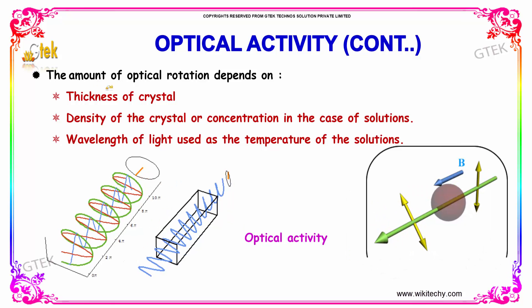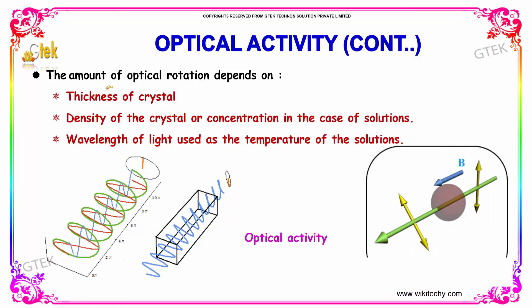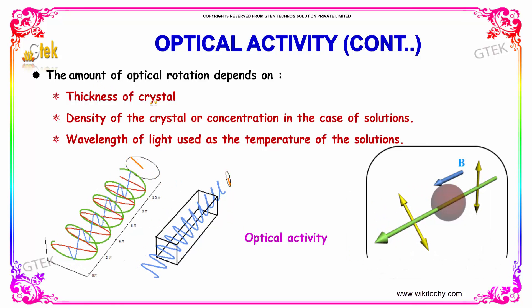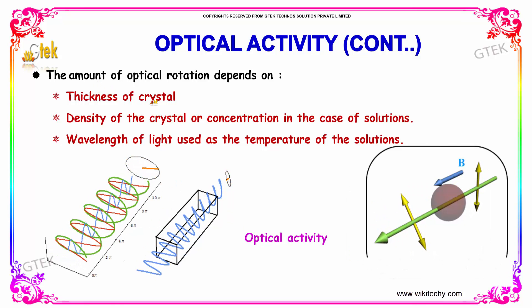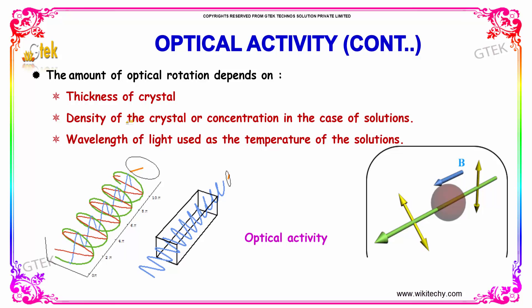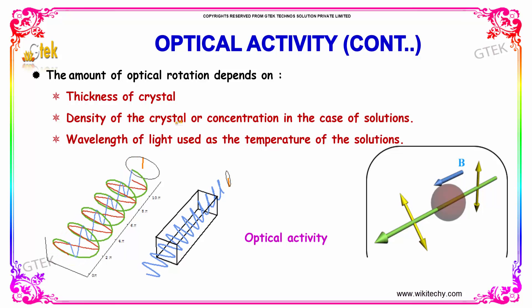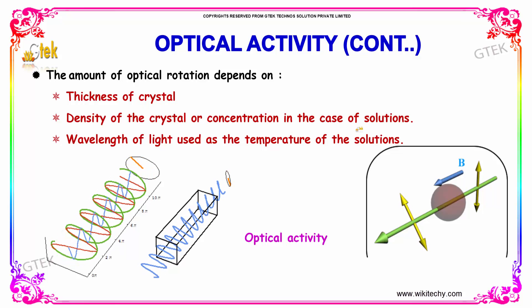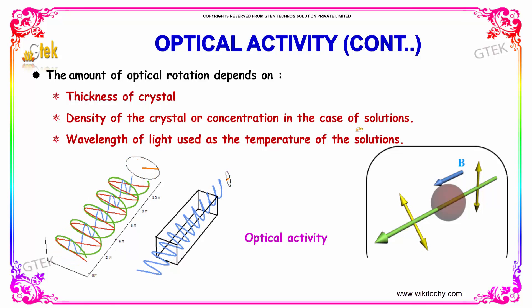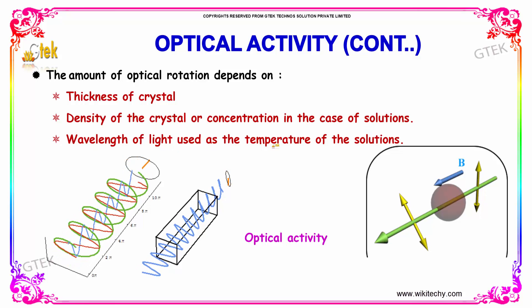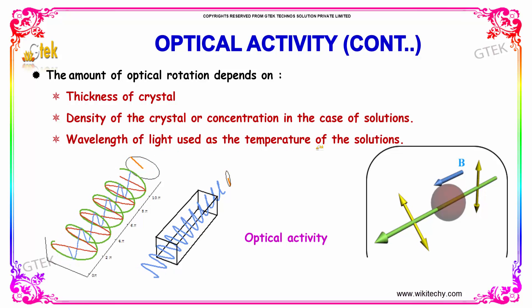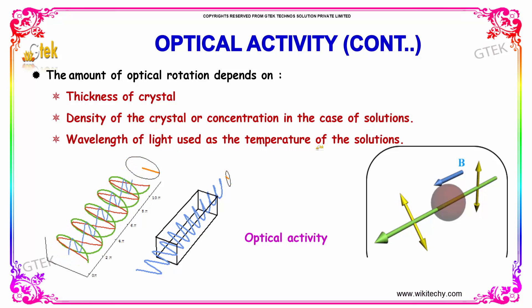The amount of optical rotation depends on the thickness of the crystal, the density of the crystal or concentration in the case of solutions, the wavelength of light used, and the temperature of the solution.